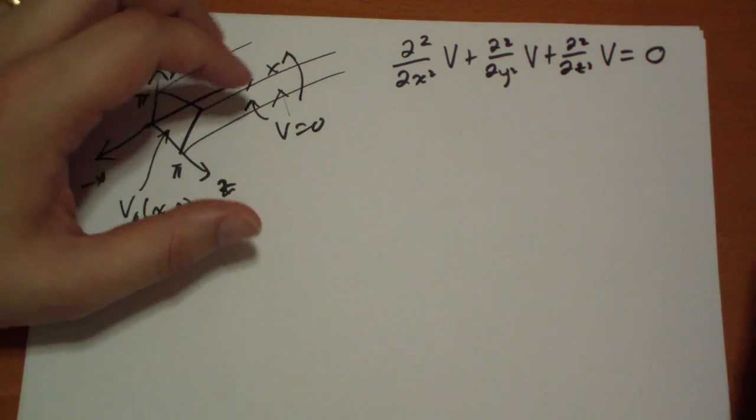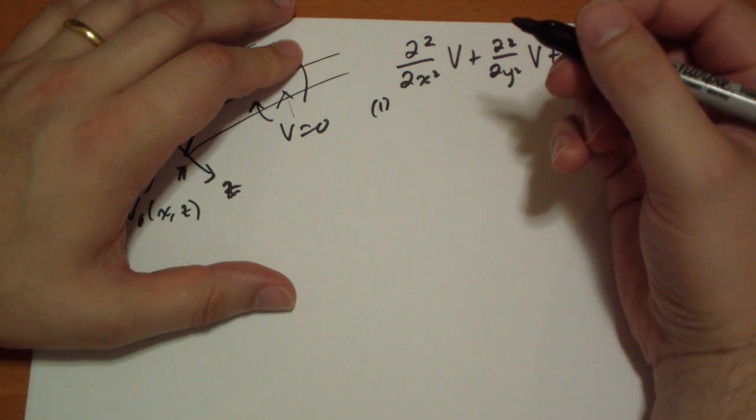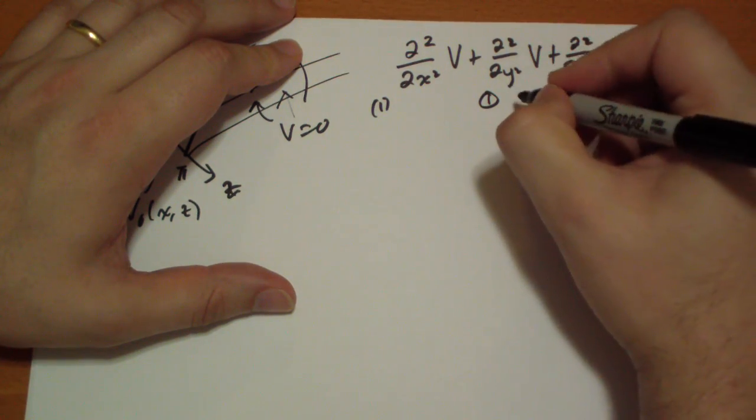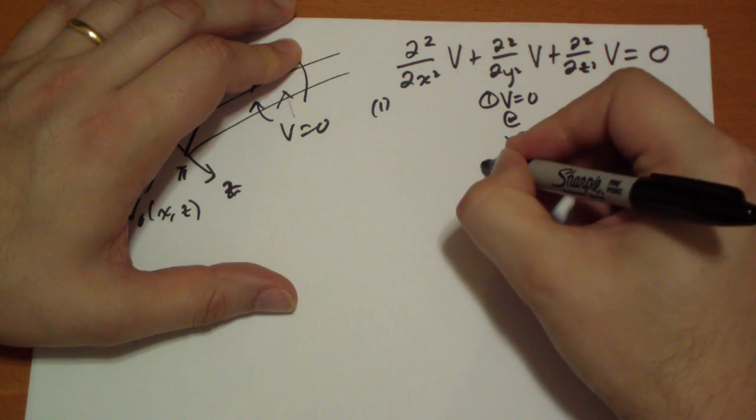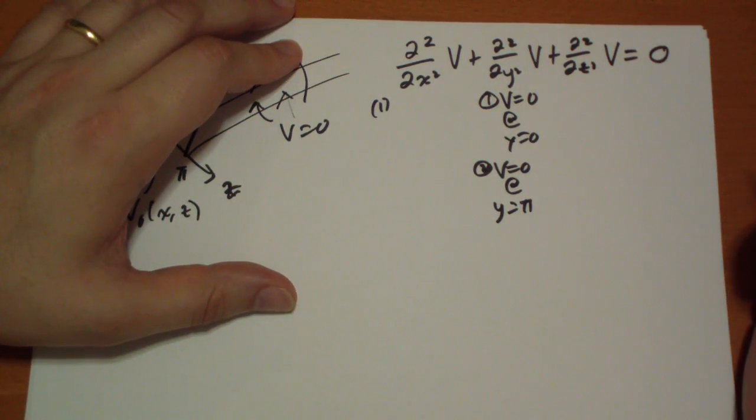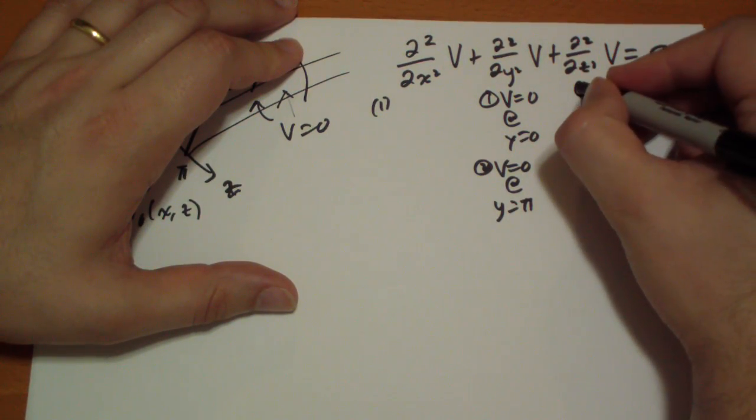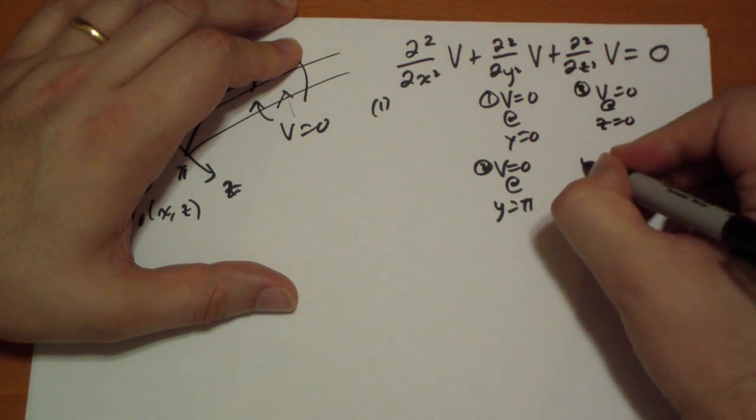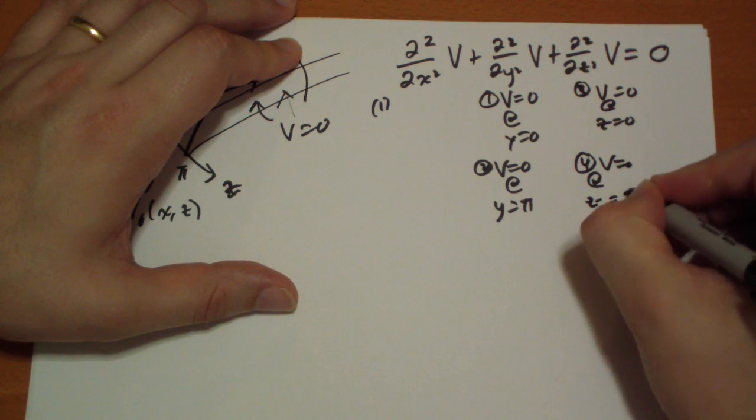We're going to need six boundary conditions. So one we have, let's write it over here actually. We have one, which is v equals zero when y equals zero. And two, v equals zero at y equals pi. And we have over here, let's call this number three, v equals zero at z equals zero. And four, v equals zero at z equals two pi.